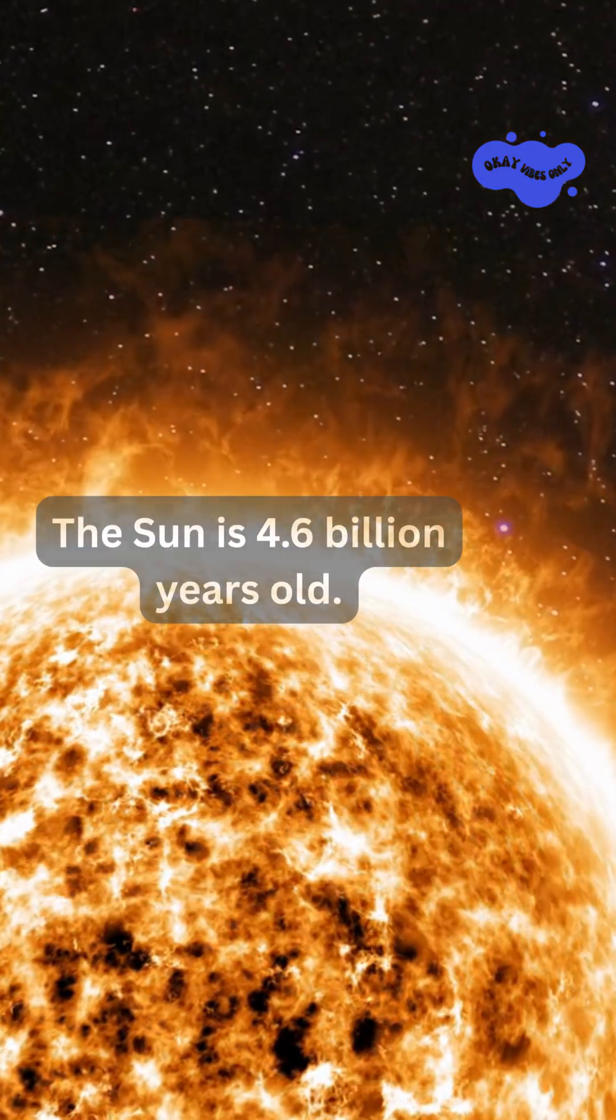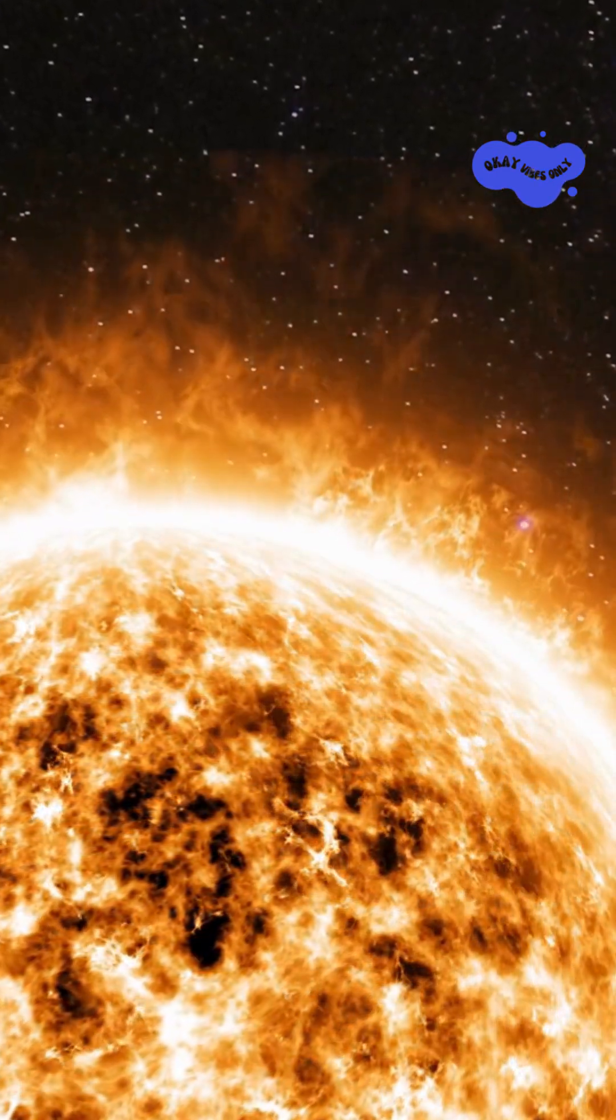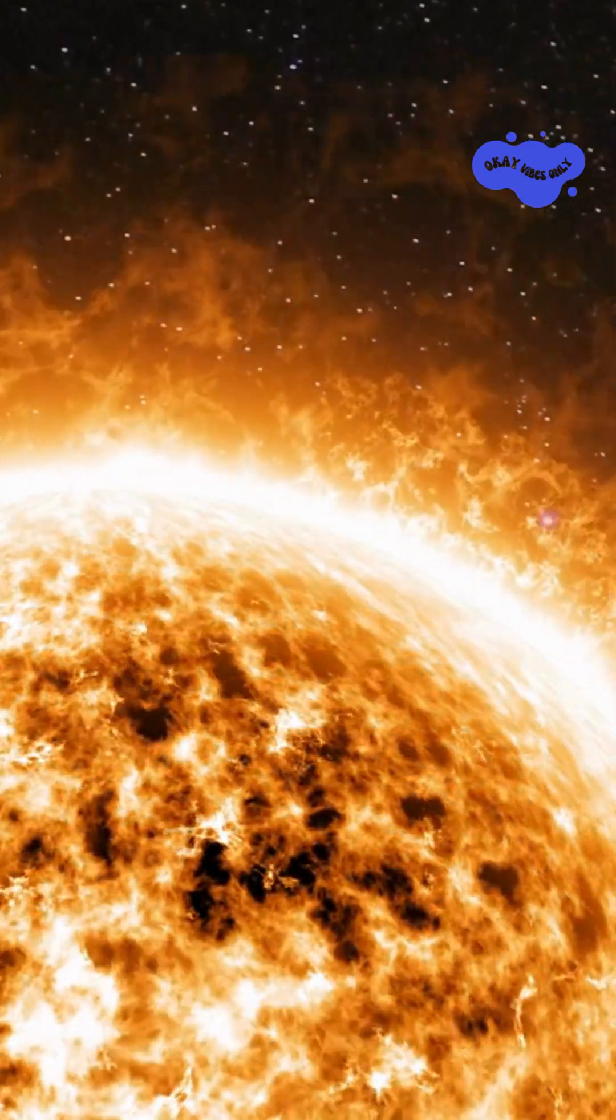The Sun is 4.6 billion years old, and in that time, it's circled the galaxy nearly 20 times. Of course, this isn't a system without change.